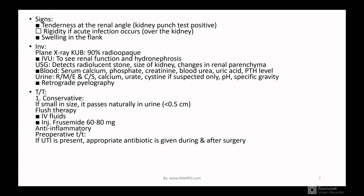Now coming to treatment — treatment can be divided into conservative and surgical. In conservative treatment, if the stone size is less than 0.5 cm it will pass naturally in urine. The patient should drink plenty of water. Flush therapy can be done with IV fluids. Injection furosemide 60–80 mg can be given along with anti-inflammatories. Pre-operative treatment: if UTI is present, appropriate antibiotic is given before and after surgery.